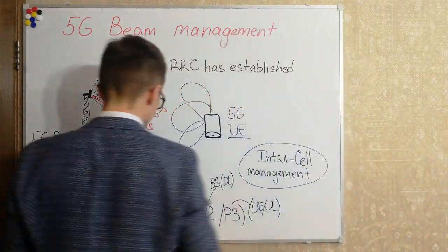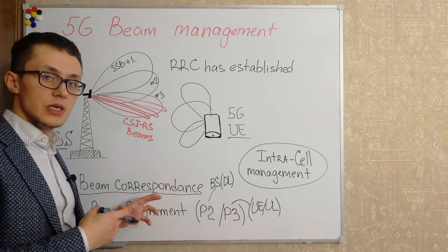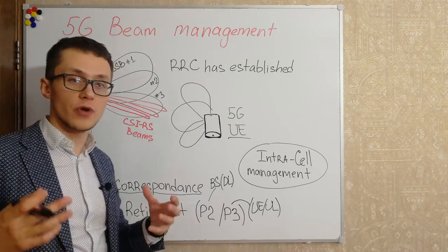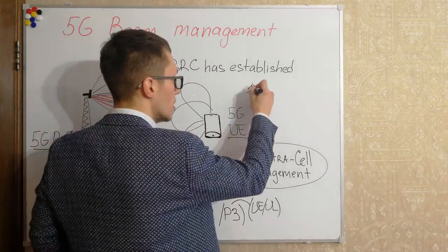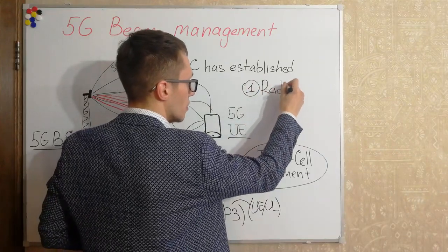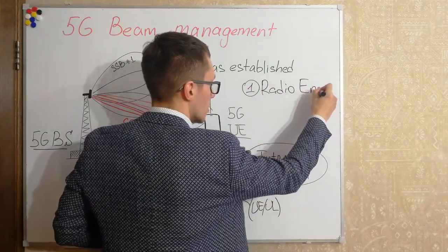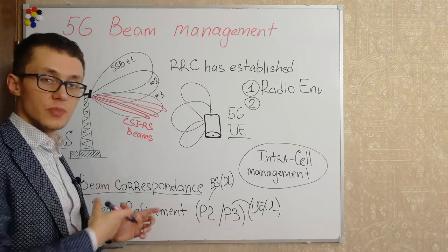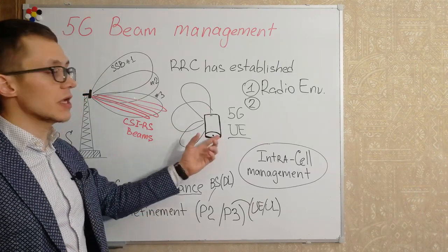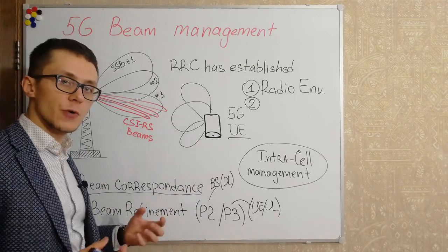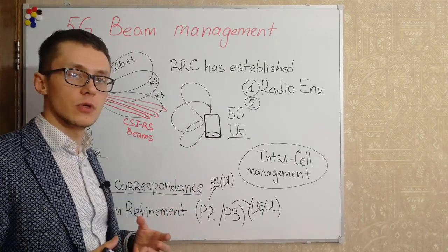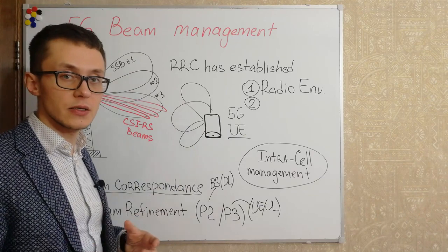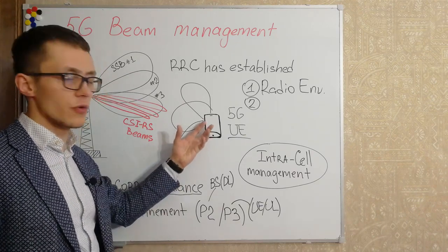Beam correspondence may not be achieved for different reasons. The first reason, already mentioned, is radio environment changes. The second reason is user equipment limitations, because the user equipment is not so powerful in terms of baseband ability, in terms of processing, in terms of radio techniques.